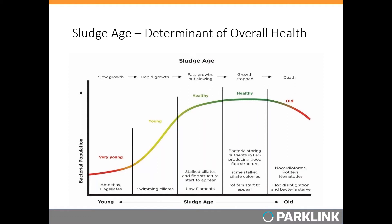You need to have healthy floc formers and good BOD removal before nitrification can occur. Healthy flocs means your sludge age is not too young and not too old. The dangerous points are highlighted in red on the graph, the acceptable range in yellow, and you really want to be in the green healthy zone.